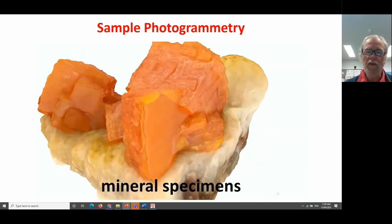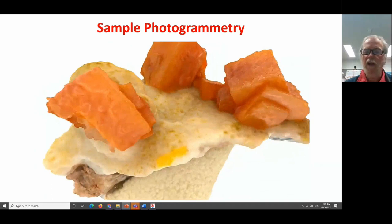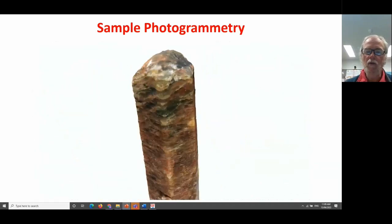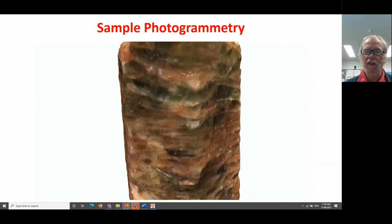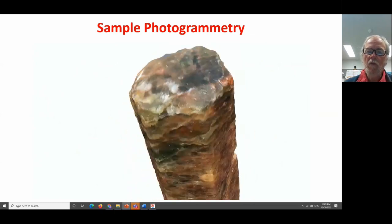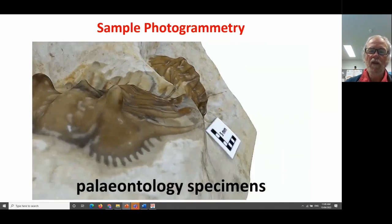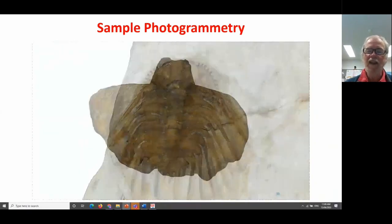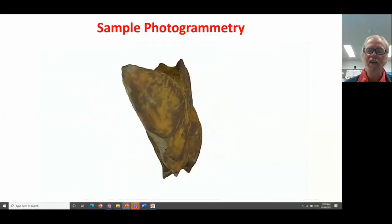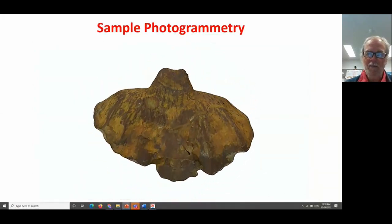We can also do this for minerals. This is an example of wulfenite from the Geoscience Australia collection and a single crystal of apatite, again from the Geoscience Australia collection. We can produce fully texture-rendered models of paleontological specimens that we could never take into a practical session because our students would either steal, scratch, or damage them. So now we can bring out some of the treasures from our collection.